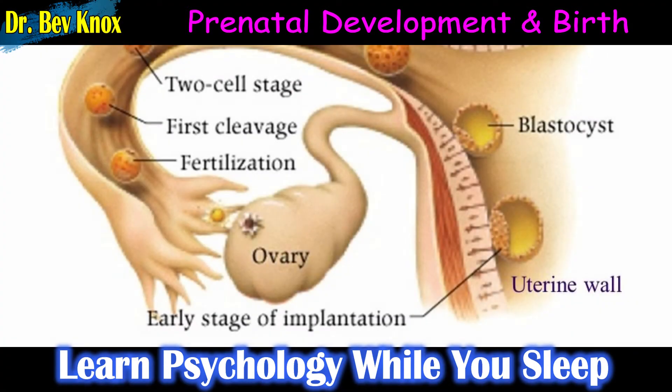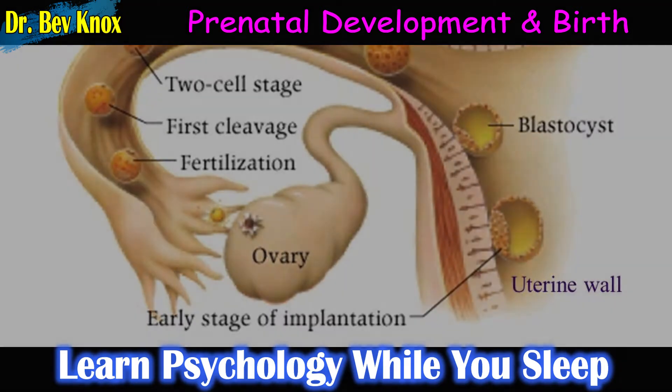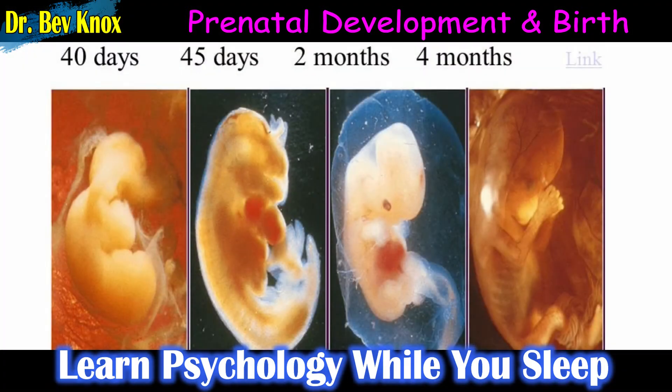About 10 days after conception, the zygote attaches to the mother's uterine wall, beginning approximately 37 weeks of the closest human-human relationship. The zygote's inner cells become the embryo; many of its outer cells become the placenta — the life link that transfers nutrients and oxygen from the mother to the embryo.